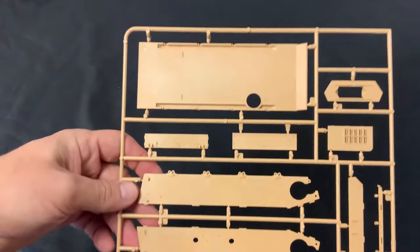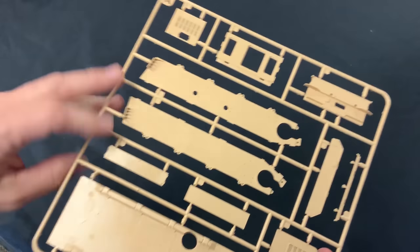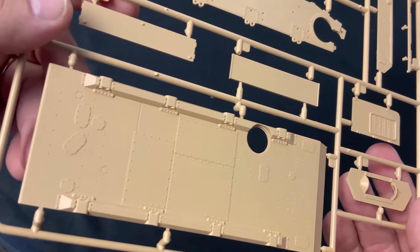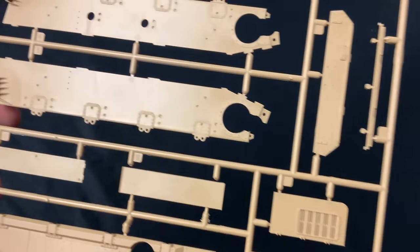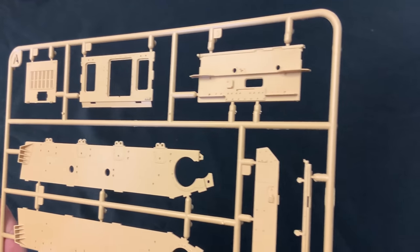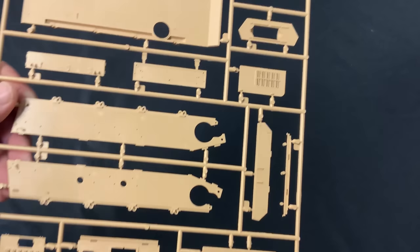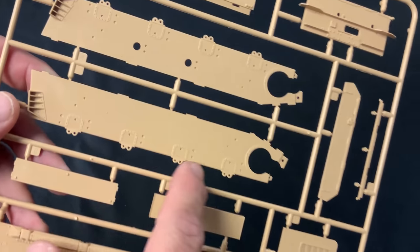The hull. Let's take a look at the hull. Hull is a multi-piece hull. That's all the inside stuff right there, so you can see some really nice detail on all of this.